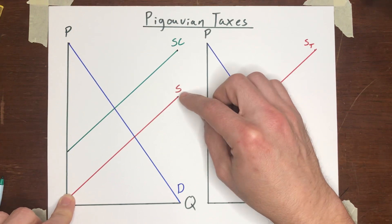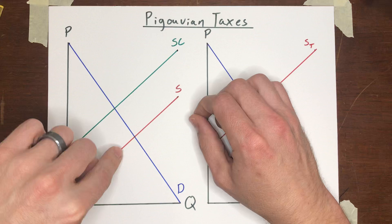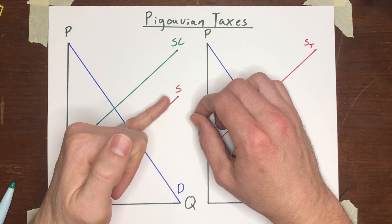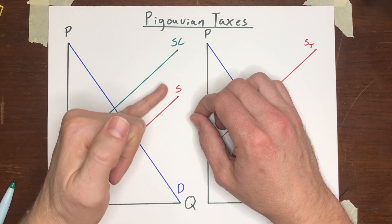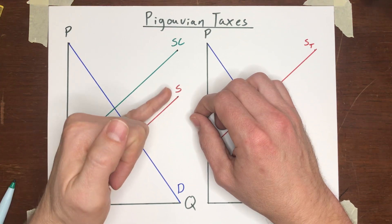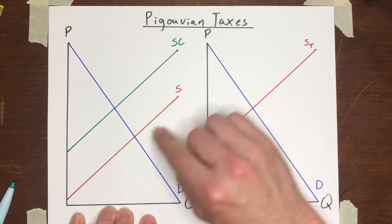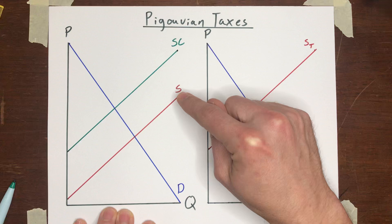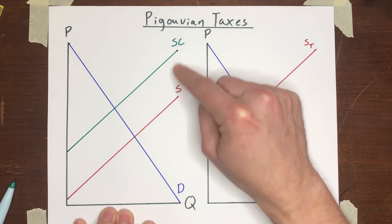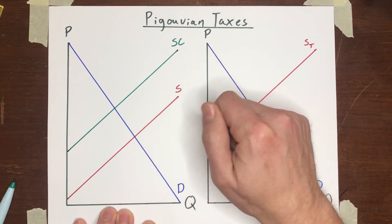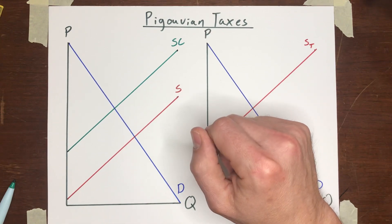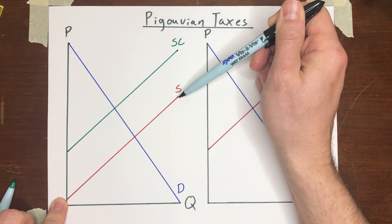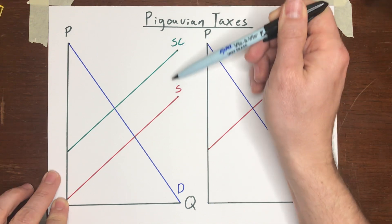And remember from our lecture on taxes and subsidies, whatever dollar amount you impose in taxes on the sellers, that's going to shift the supply curve up by an amount equal to that tax because you're increasing the cost of doing business, and so they won't be willing to sell for the same low prices that they were before. When you tax them, they will require higher prices from the buyers in order to produce those same units. So the idea of a Pigouvian tax is to impose a tax on the sellers that is equal to the external cost.